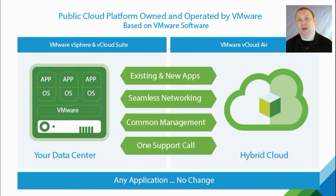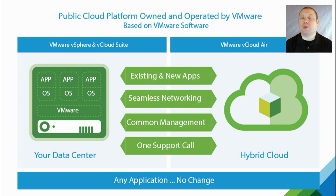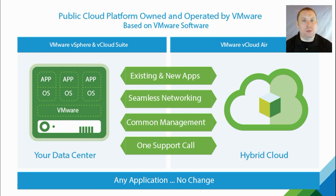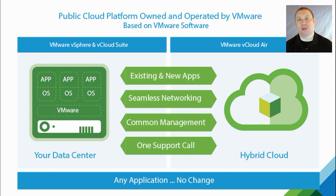VMware hybrid cloud started with vCloud Air, which has since matured and moved on to a wide ecosystem of partners. There are now roughly four and a half thousand VMware cloud providers who all operate their own cloud services, but based on a core VMware platform — Cloud Foundation, the vSphere hypervisor for software defined compute, software defined storage, and software defined networking — giving you the ability to move things to and from data centers.